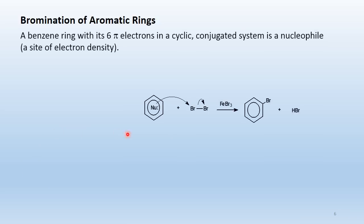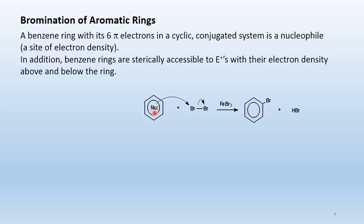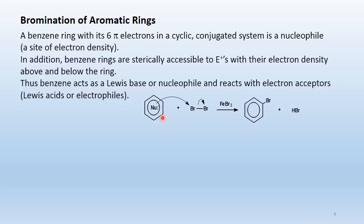In bromination of aromatic rings, a benzene ring with its six pi electrons in a cyclic conjugated system is a nucleophile — a site of electron density and electron donor. Benzene rings are also sterically accessible to electrophiles with their electron density above and below the ring. Thus benzene acts as a Lewis base or nucleophile and reacts with electron acceptors, which are Lewis acids or electrophiles.